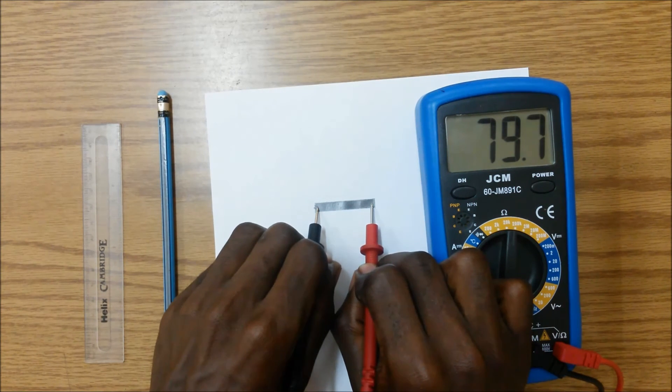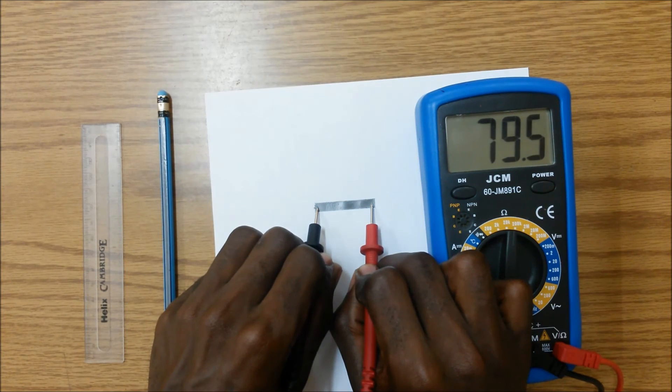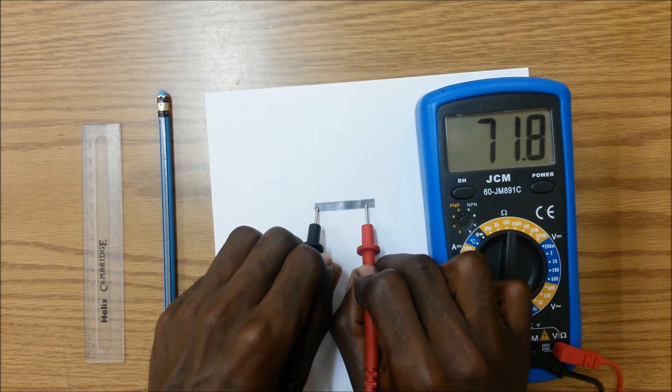And as you can see we're getting a resistance of 80 kilo ohms and we can vary that resistance by changing the position of the two metal probes.